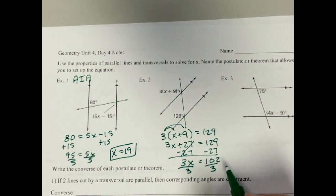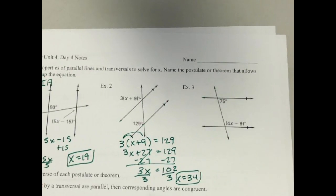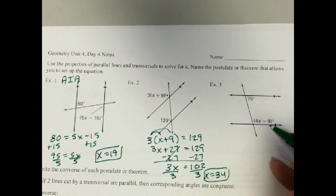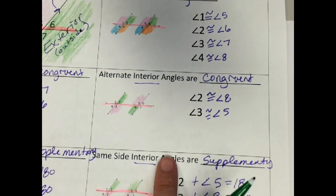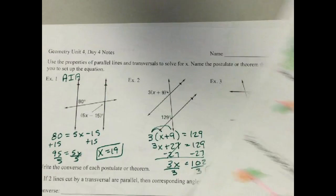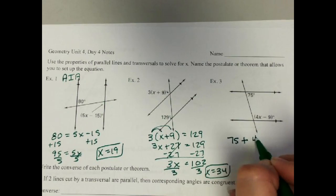And our last one here, these are on the same side of the transversal, and they're also interior, because they're inside the parallel lines. So I know same side interior, same side interior, those were supplementary. So they need to add up to equal 180. So I'll have this one, 75, plus this one, 4x minus 9, equals 180.